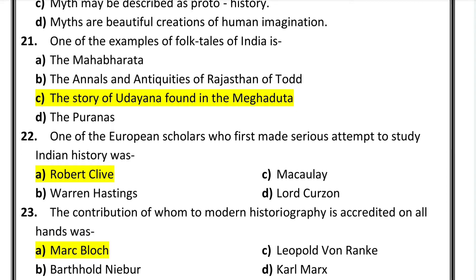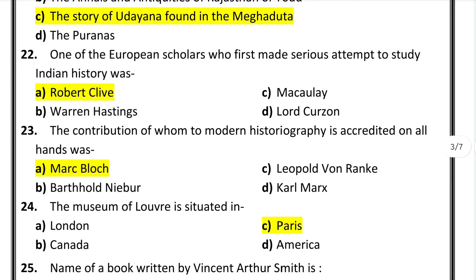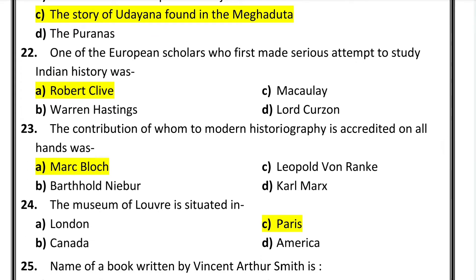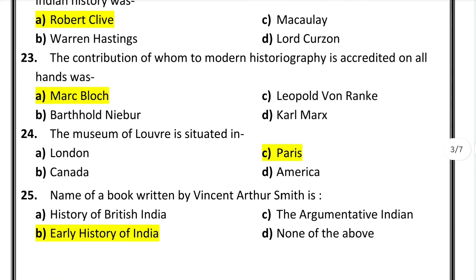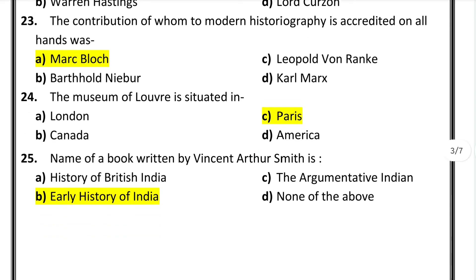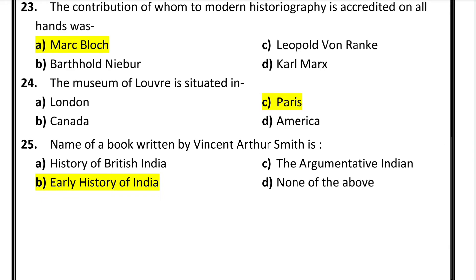Question number 22: one of the European scholars who first made a serious attempt to study Indian history was Robert Clive. Question number 23: the contribution to modern historiography accredited on all hands was Mark Bloch. Question number 24: the Museum of Louvre is situated in Paris. Question number 25: the name of the book written by Vincent Arthur Smith — the answer is Early History of India.